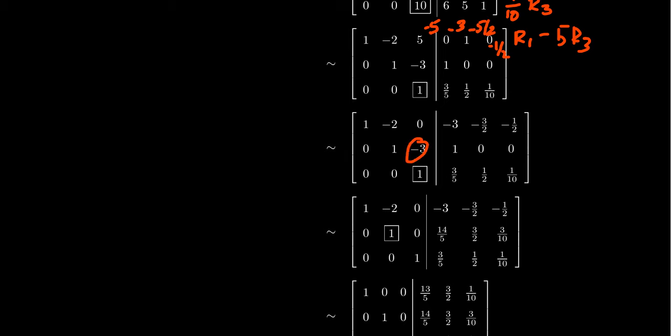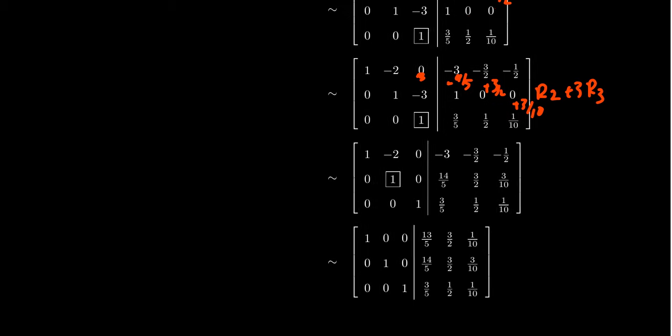Next, we have to get rid of this -3. So we take row 2 plus 3 times row 3. You might have wondered, why don't you just do both at the same time? Although we could have, I'm trying to emphasize step by step what is that sequence of row operations. So we're going to get 0, 14/5, 3/2, 3/10.